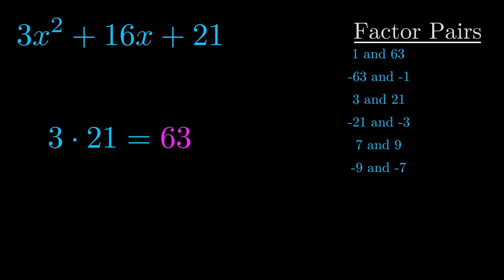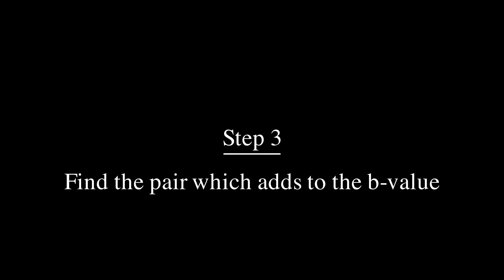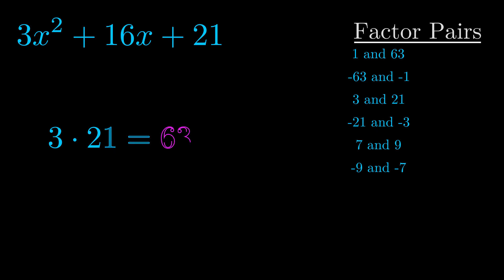Now once you have these factor pairs, the goal is to find which of these pairs adds to the b value. The b value is the coefficient on the x term. That's the middle term, the one that we haven't done anything with yet. And really this is the only factor pair that we need.